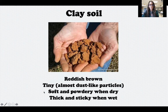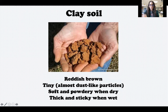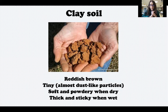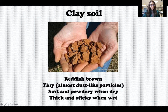The particles of clay soil are very, very tiny — they're almost dust-like. You may be thinking those pieces look very large, but those are actually clumps of clay soil. When clay soil is dry it's very soft and powdery, almost like a dust. But when it gets wet it's very thick and sticky, like clay that you're familiar with to build things. You can kind of mold it into different shapes — some people make pottery out of clay soil, like bowls or plates or dishes. Some cultures even build houses out of clay soil.